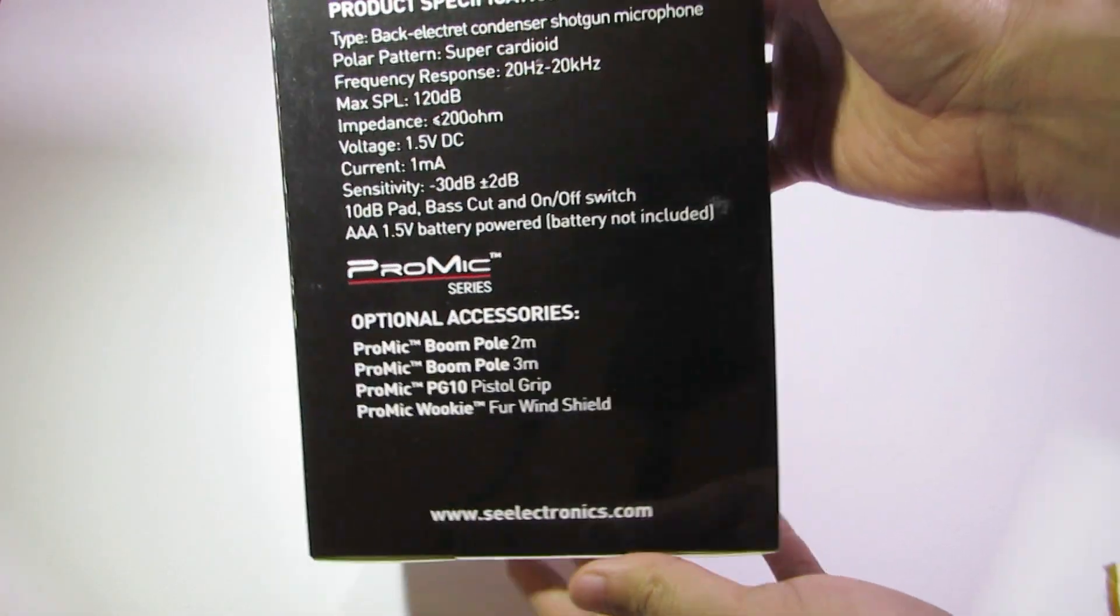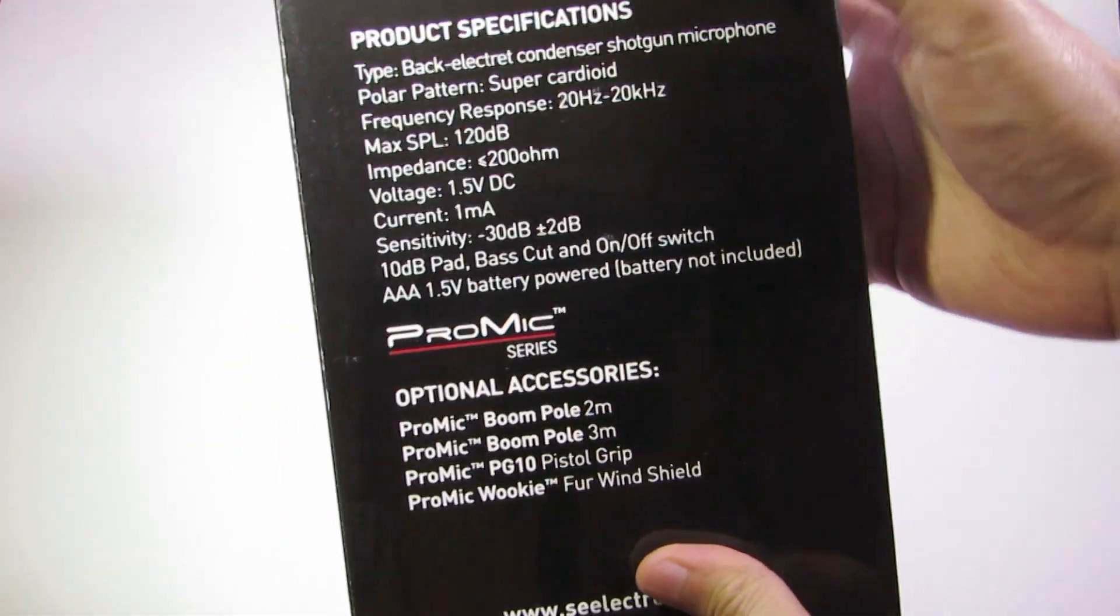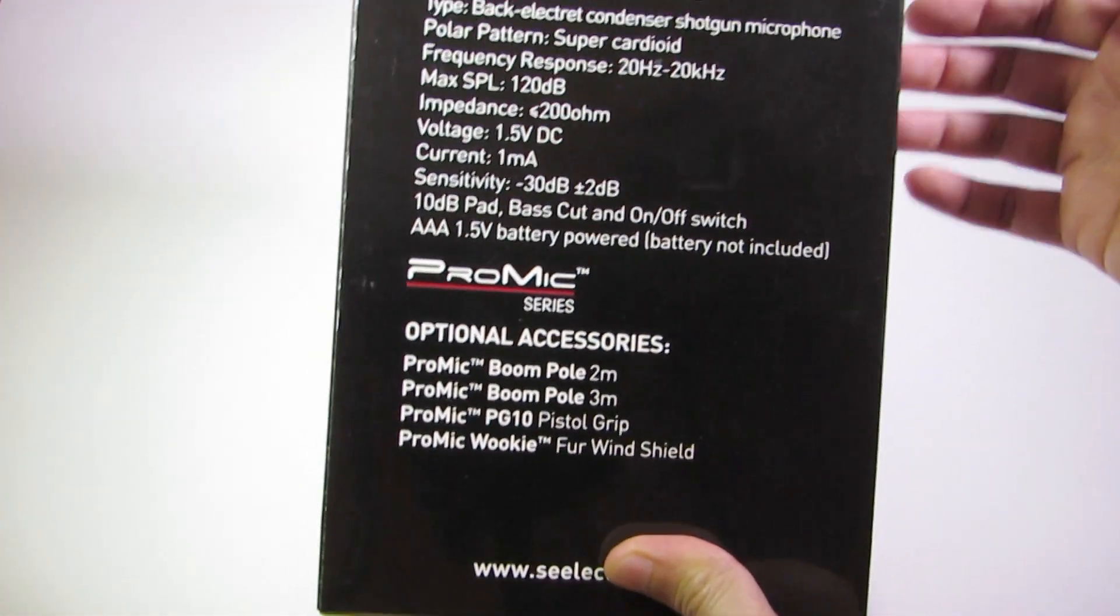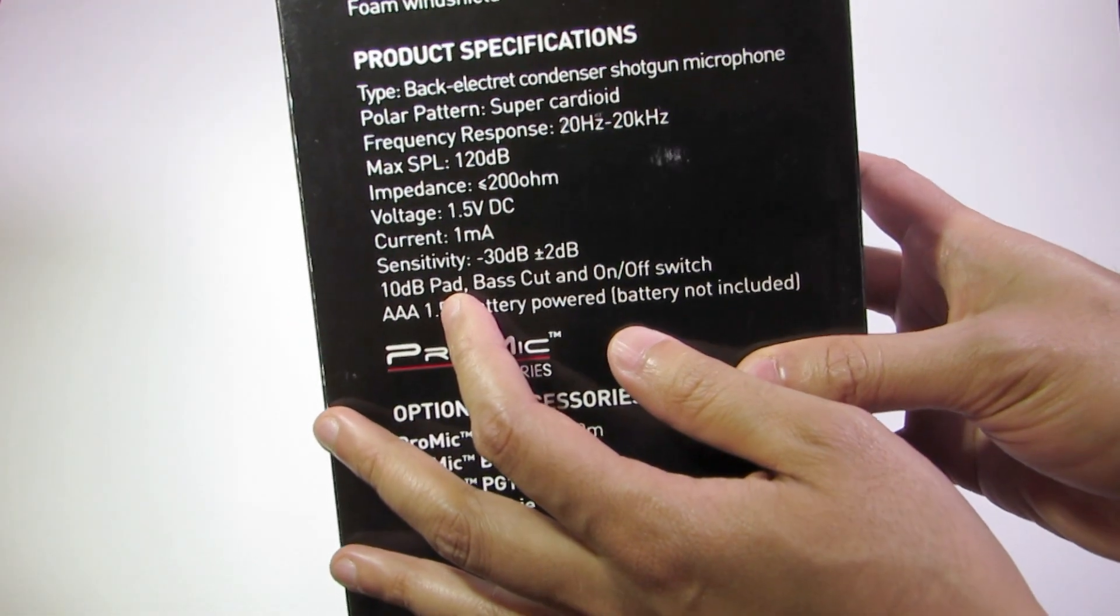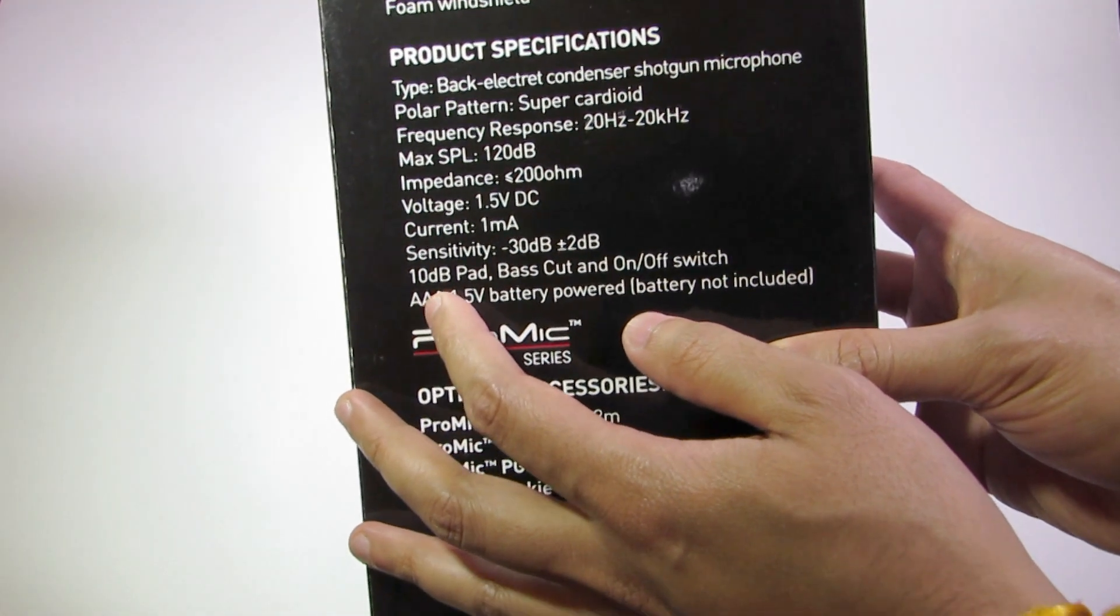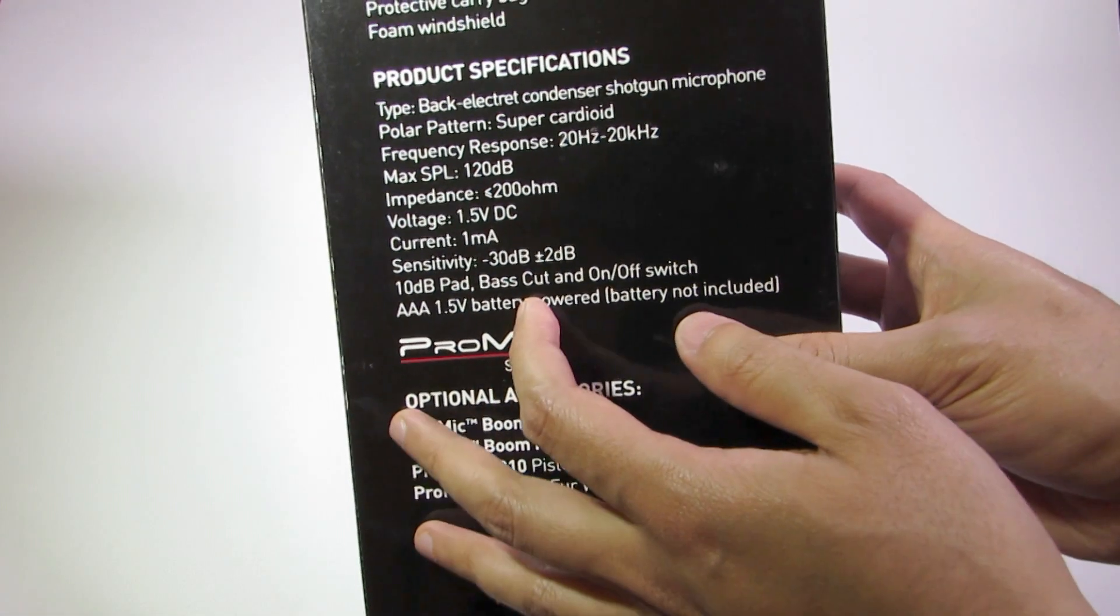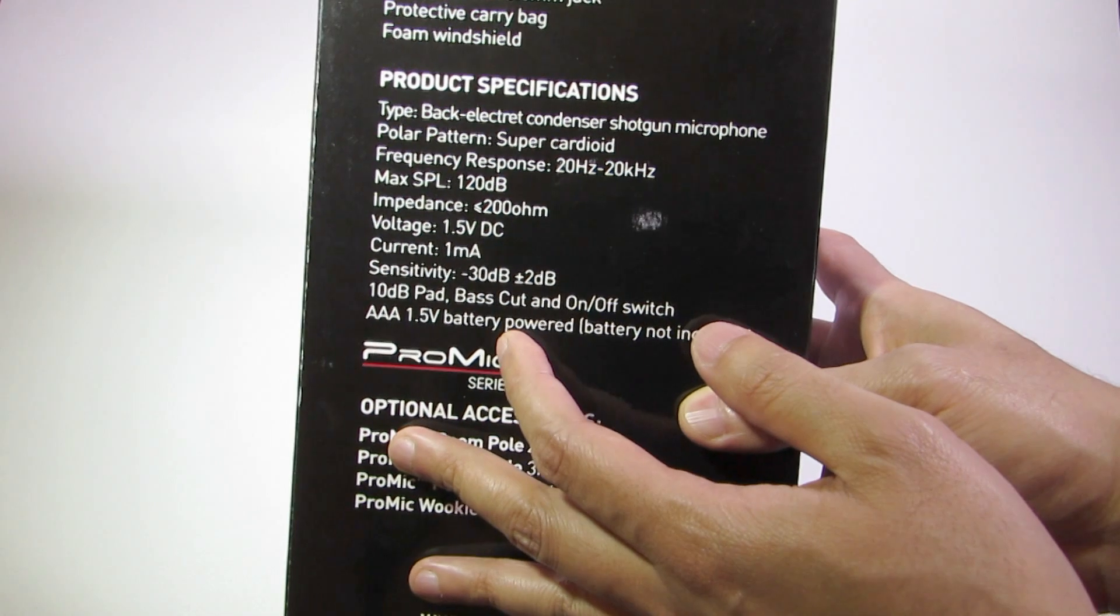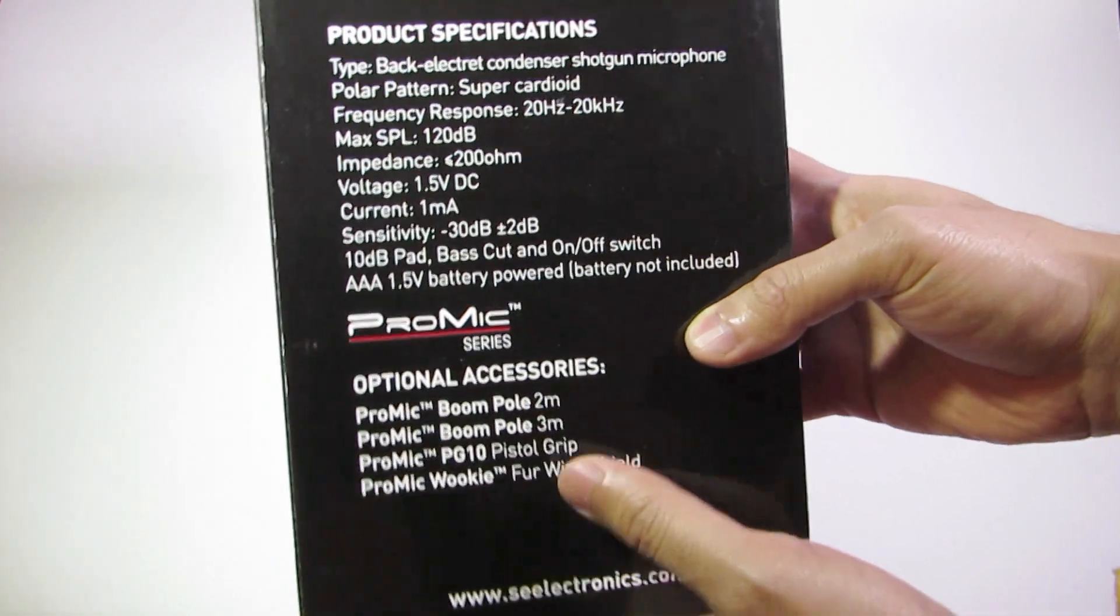The key thing here is it comes with a 10 decibel pad, which I think is just a downshift from a loud source on the fly, so you don't have to manually go into volume control or recording control.